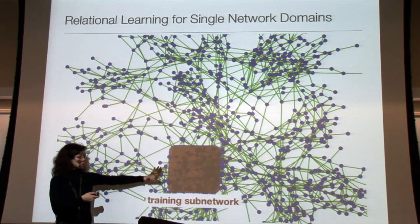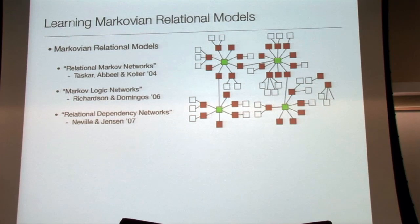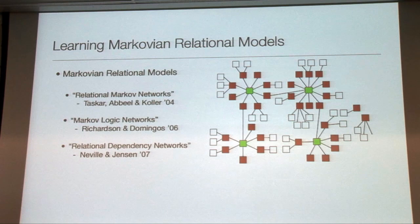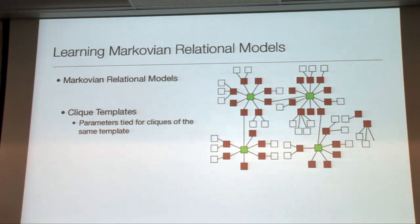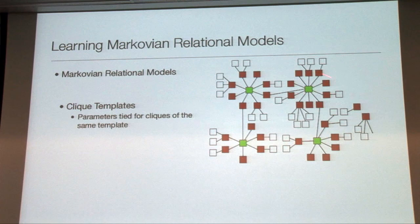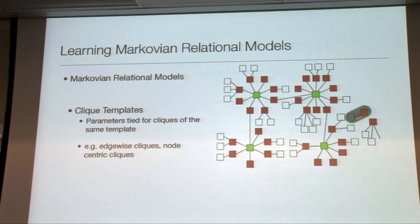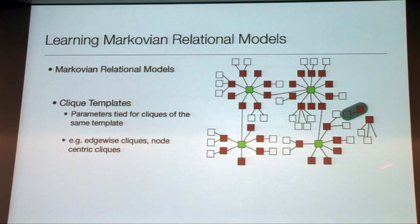We're focusing on the characteristics of learning in this setting, not inference. The class of models we consider are Markovian relational models — relational Markov networks, Markov logic networks, and relational dependency networks all fall into this category. What we do is take the graph structure and formulate it as a Markov network with clique templates repeated over the network, tying the parameters of the clique templates so they're the same type across the network. For example, edgewise cliques laid over every pair of linked nodes, or node-centric cliques involving a particular node and all its neighbors.